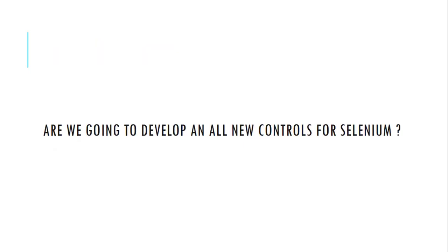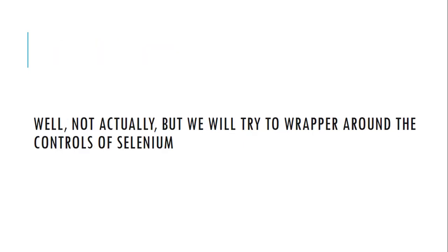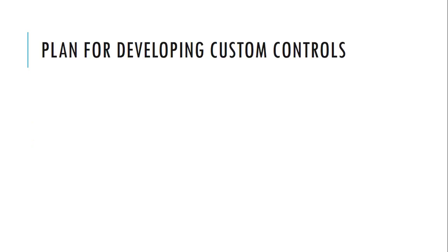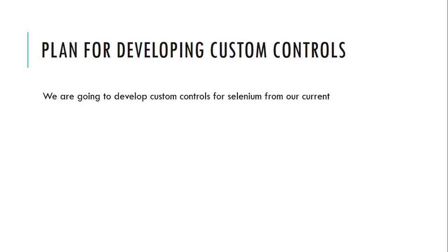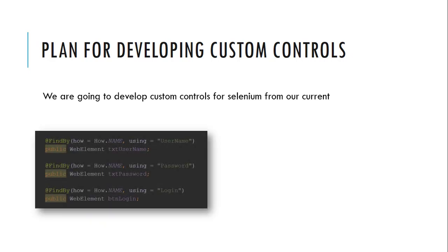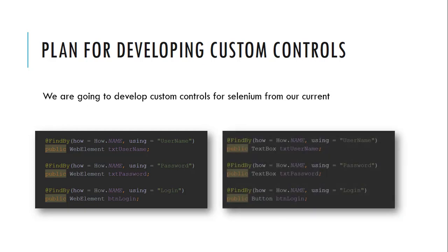In this section, we are going to develop controls for Selenium — not all-new controls, but we will wrap around the existing Selenium WebElement controls. The plan is to evolve code like 'public WebElement txtUsername' and 'public WebElement btnLogin' into something more meaningful like 'public TextBox txtUsername' and 'public Button btnLogin', using our own custom controls.